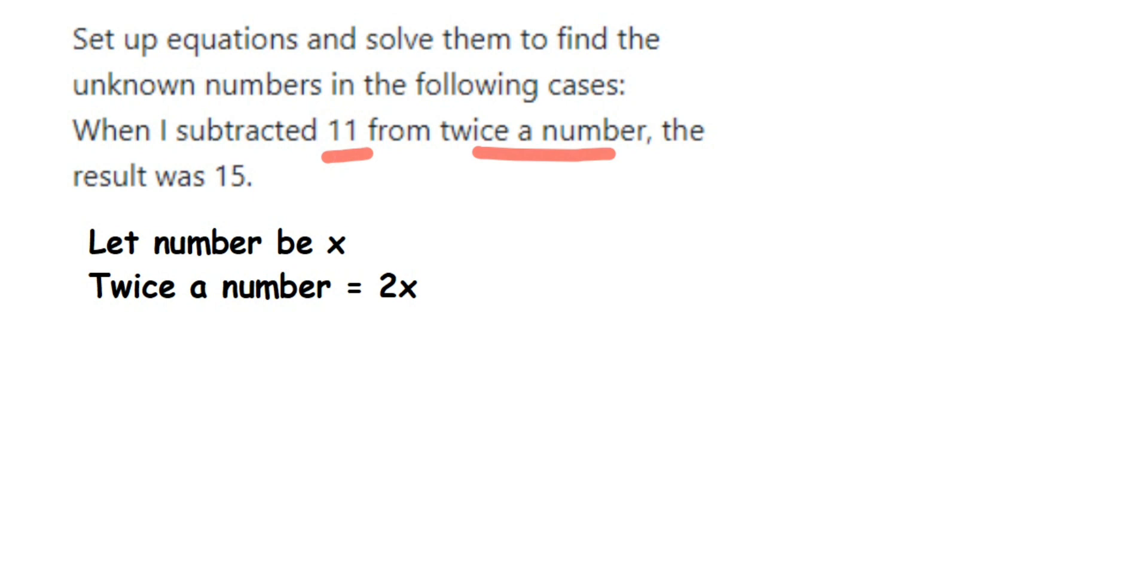Two times a number. Now let us form an equation. When I subtract 11 from where? From twice a number. Twice a number means 2x. So from 2x, we're subtracting 11, so minus 11 equals—the result was 15—so this equals 15. That's it. This is a linear equation we have got.